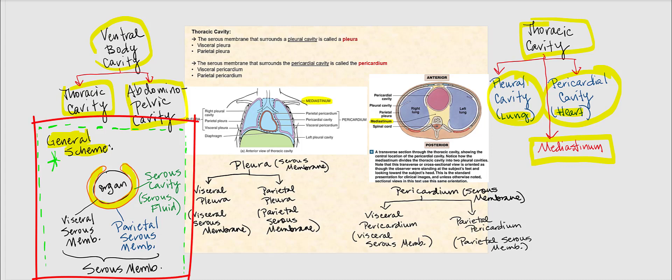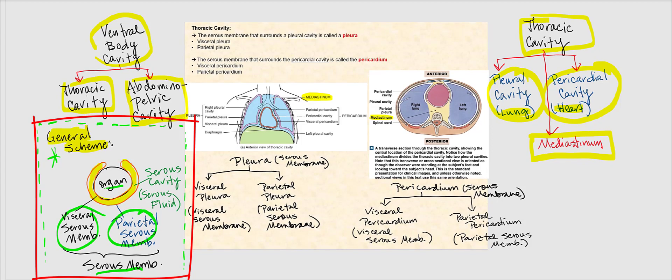We have our organ, and the visceral serous membrane and the parietal serous membrane together give us the serous membrane. The serous cavity is in between the visceral and the parietal serous membrane and is filled with serous fluid. The serous membrane is made up of simple squamous epithelium referred to as mesothelium.